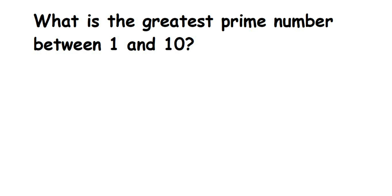Everyone has a question on prime numbers. The question is: what is the greatest prime number between 1 and 10? So we need to find out the greatest prime number between 1 and 10. Prime numbers are the ones which have exactly two factors — they are divisible by only two numbers: one is 1, and the next is the number itself.